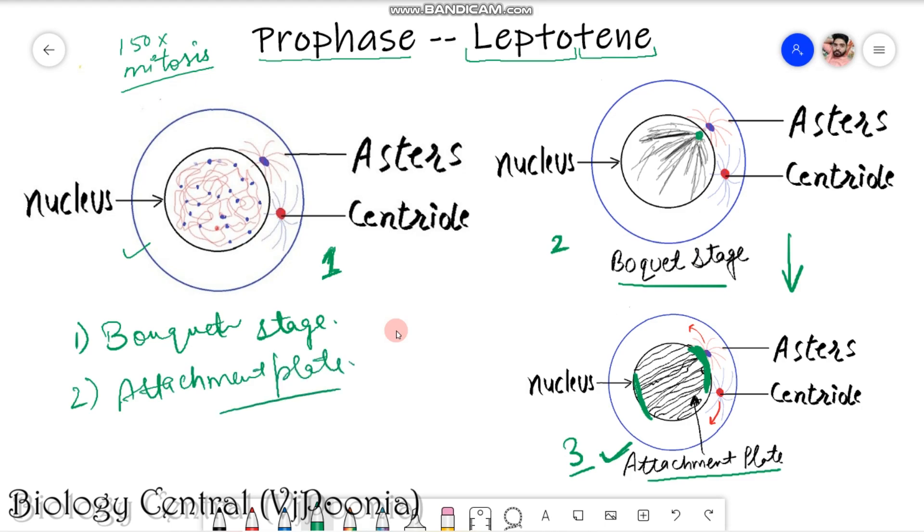In case of plants there is something different which is known as synizetic condition. This synizetic knot or synizetic condition present in the plants only, particular for plants, and this only forms once which means the attachment plate condition is only forming once in the plant cells. So it is known as synizetic knot.